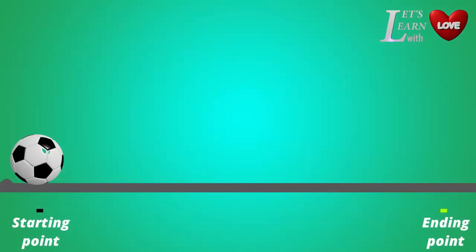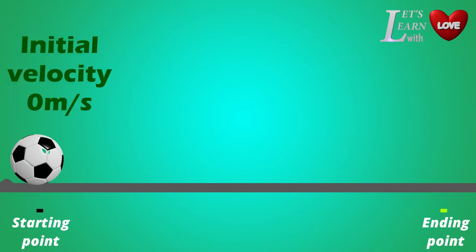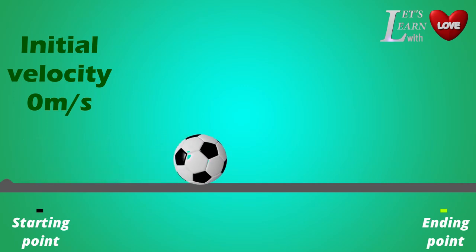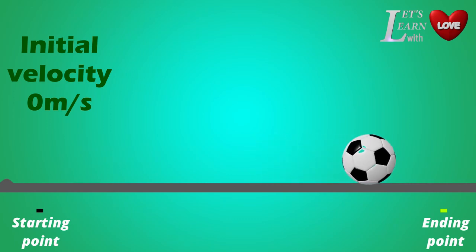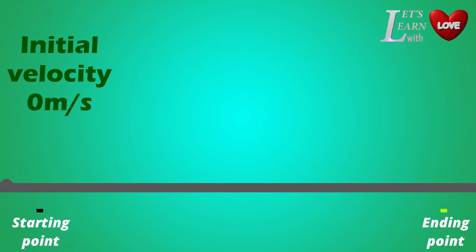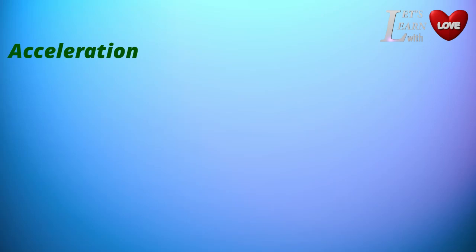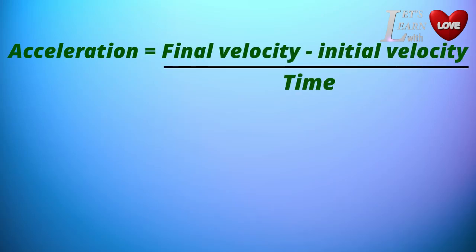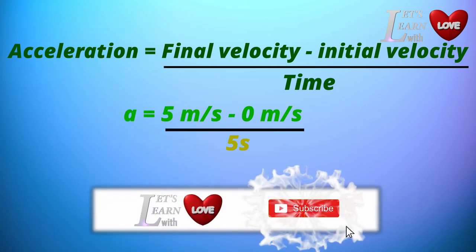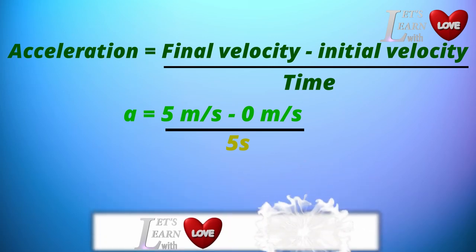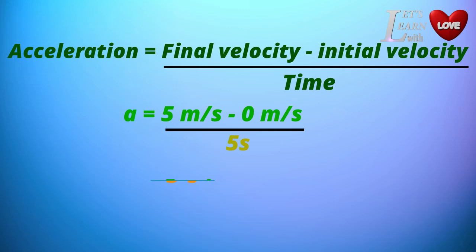For example, if you have a ball starting from rest — that means initial velocity is 0 meters per second — and the final velocity is 5 meters per second, we calculate acceleration as: final velocity minus initial velocity divided by time. That is 5 minus 0 divided by 5 seconds. So 5 divided by 5 equals 1 meter per second squared.